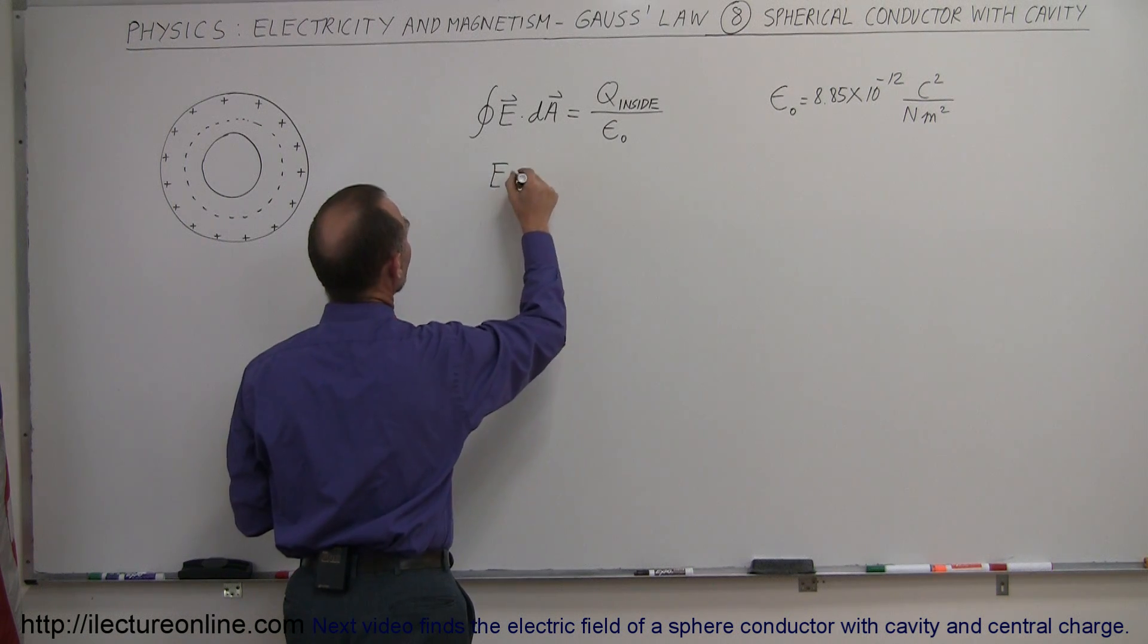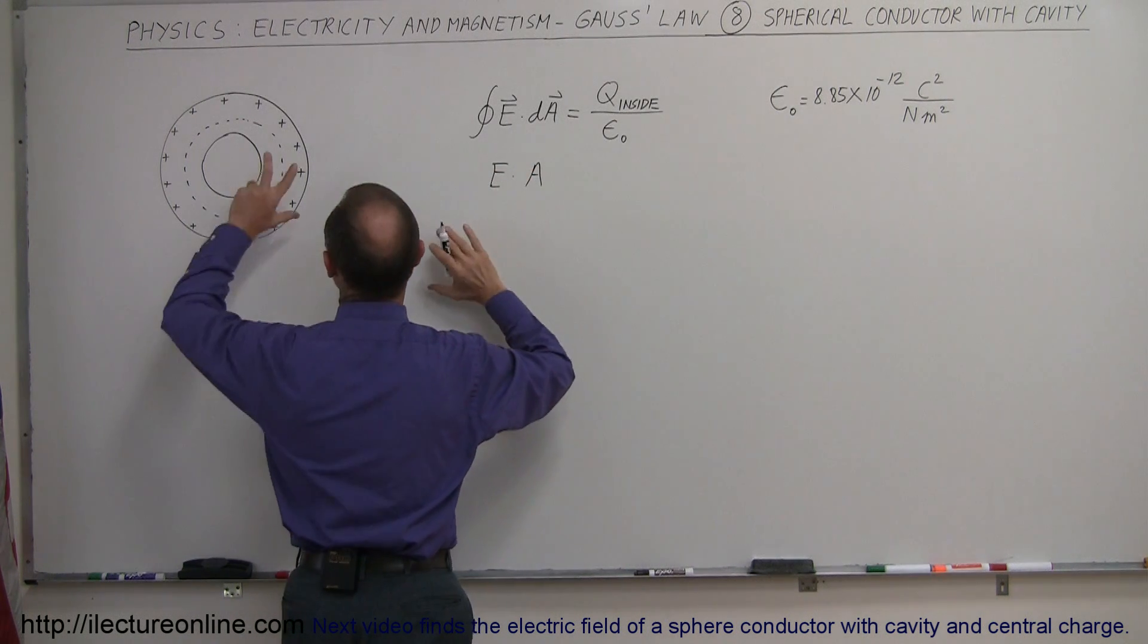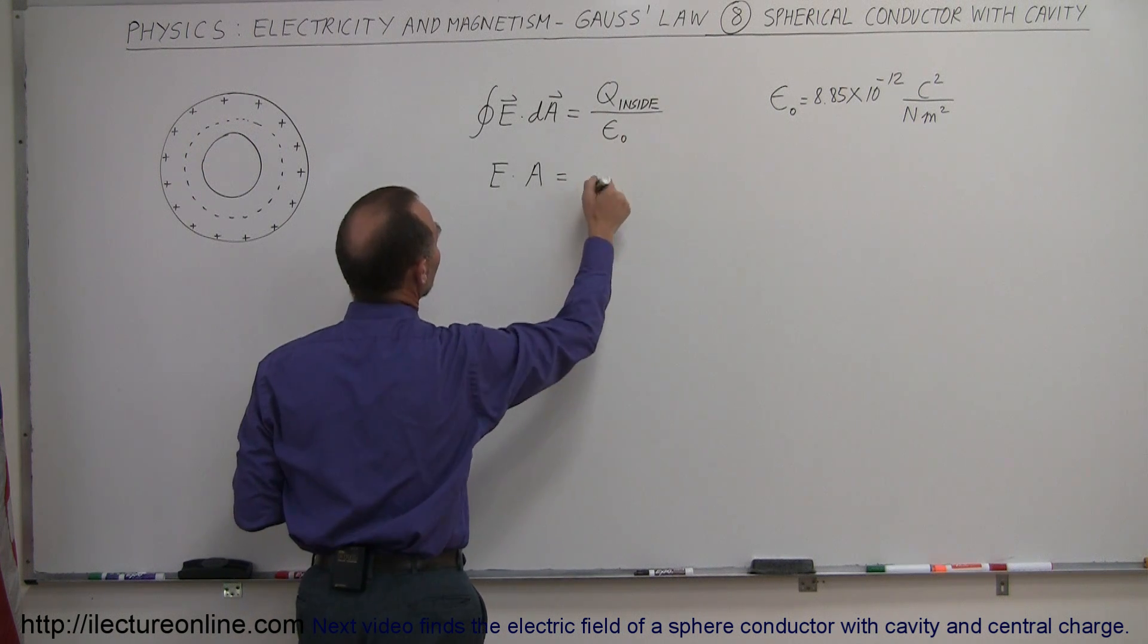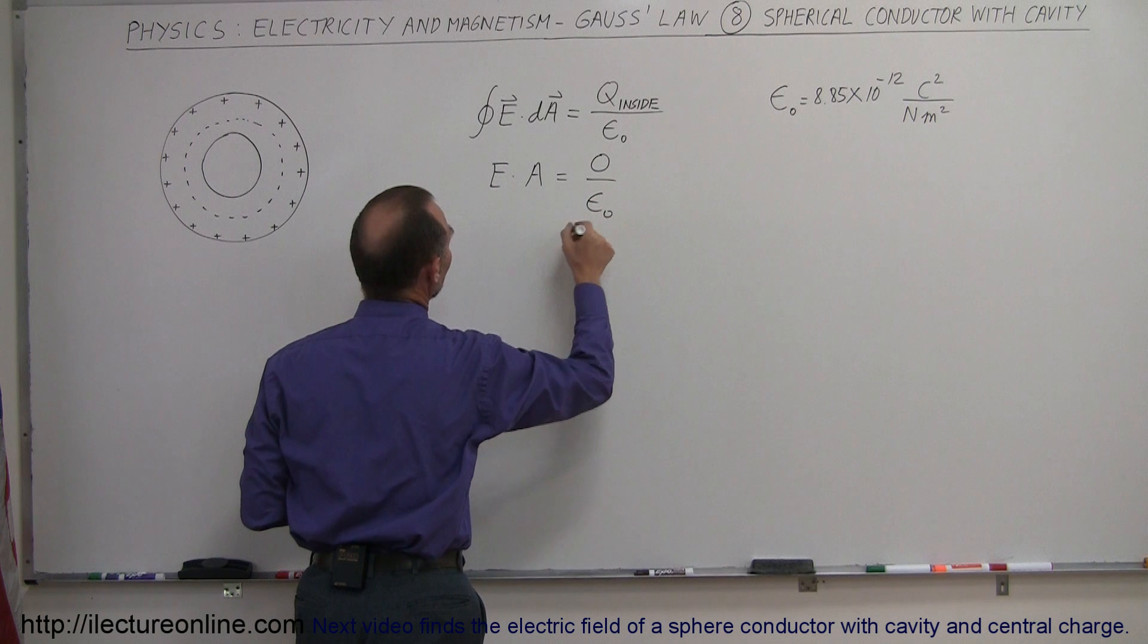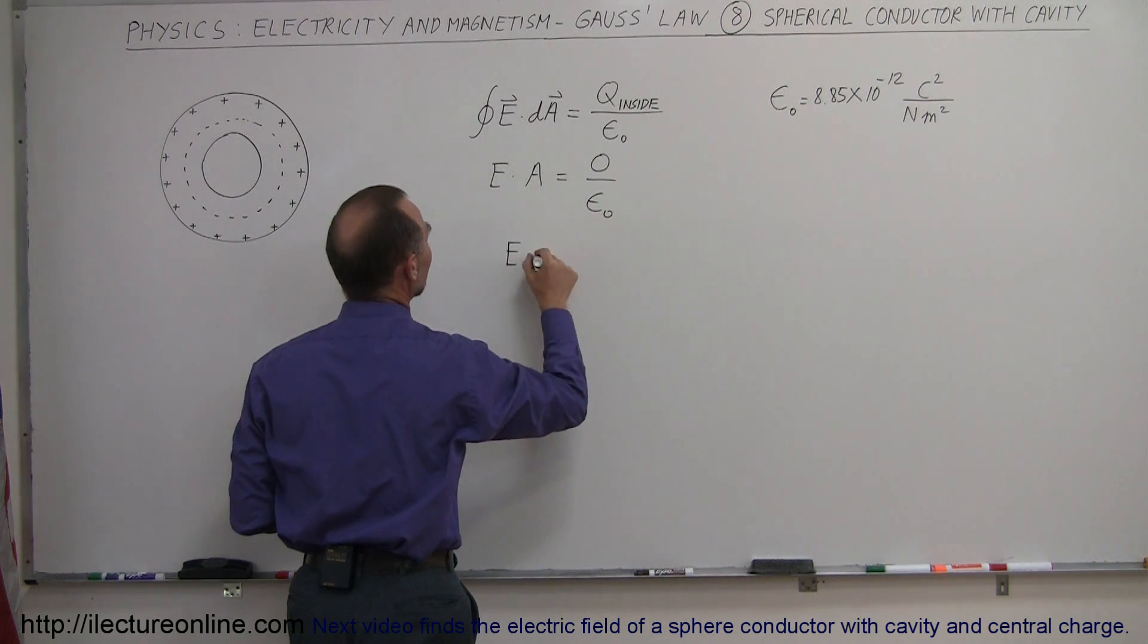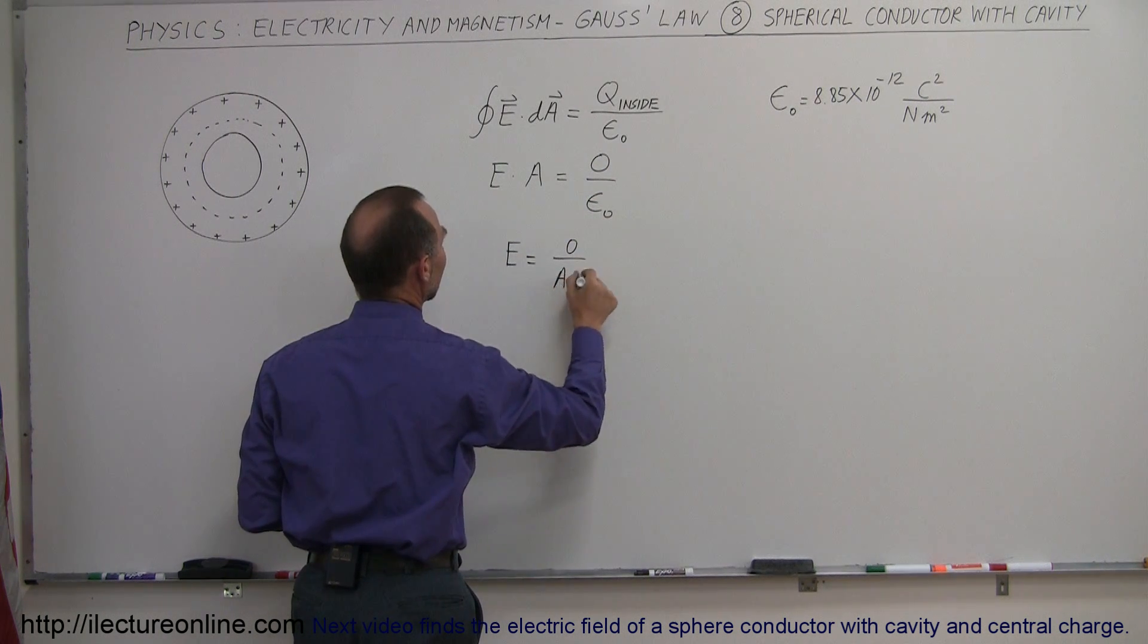E dot the area, or times the area of the Gaussian surface, will be equal to Q inside divided by epsilon naught. But Q inside is zero divided by epsilon naught, so therefore the electric field is simply equal to zero divided by A times epsilon naught.